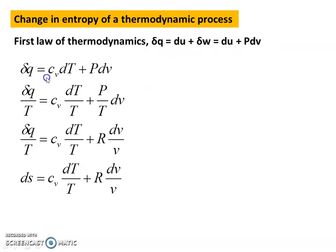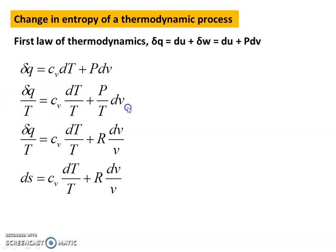Now, del Q = du + p dv, where the change in internal energy du = Cv dT. So del Q = Cv dT + p dv. Dividing the equation by T, we get: del Q / T = Cv dT/T + (p/T) dv.